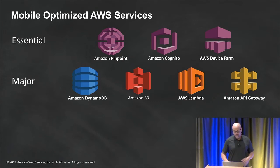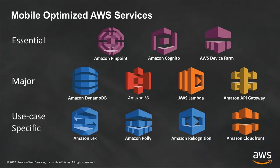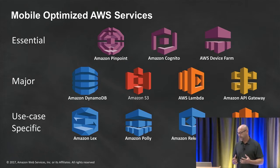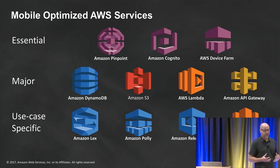For use-specific services, Lex is the chatbot with Polly for text-to-speech. Amazon Rekognition is our managed object, face detection, and tagging service for images and video. And then Amazon CloudFront is our distribution service for fronting an S3 bucket and caching into edge locations.